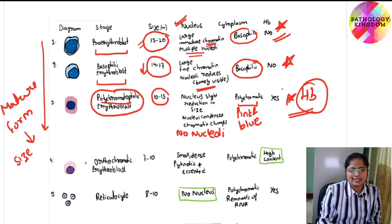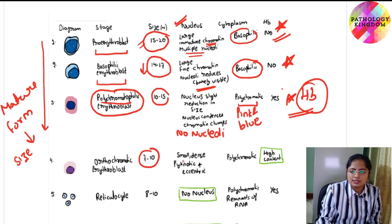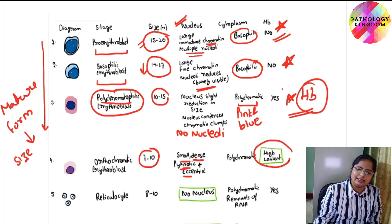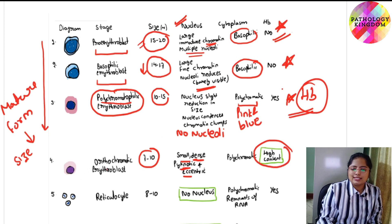The next stage is orthochromatic erythroblast. The size is 7 to 10 microns. The nucleus is small, dense, pyknotic, and eccentric — as you can see in this diagram. The cytoplasm is polychromatic with high hemoglobin content. This is the stage where the nucleus becomes eccentric and is extruded outside.